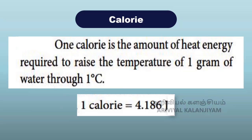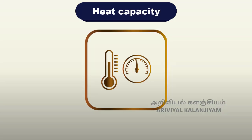The most commonly used unit of heat is calorie. One calorie is the amount of heat energy required to raise the temperature of 1 gram of water through 1 degree Celsius. One calorie is equal to 4.186 Joule.